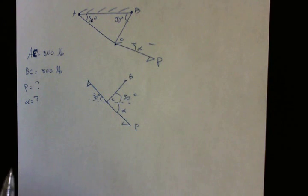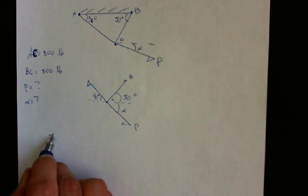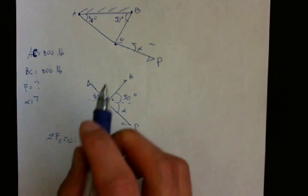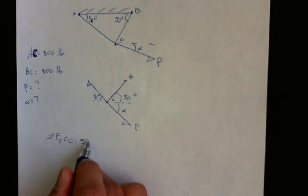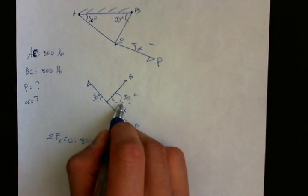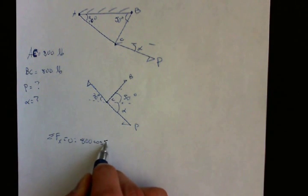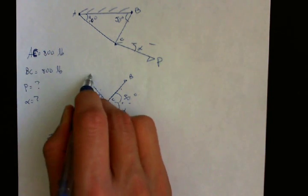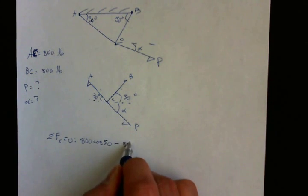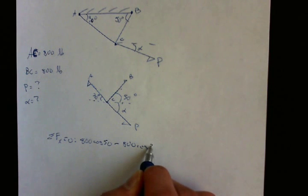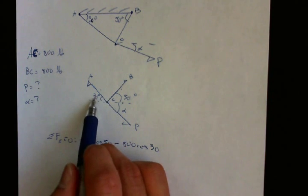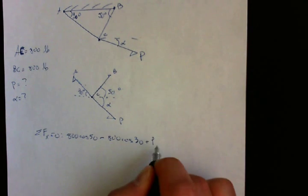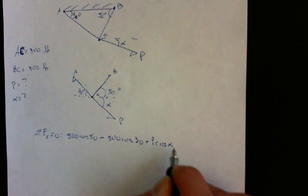So let's start with the forces in the X component. Sum of the forces in the X component equals zero. We have this. So 800 adjacent over hypotenuse cosine 50 minus this one adjacent over hypotenuse minus 800 cosine 30. And here is minus because the force is going to the left. Plus P cosine alpha equals zero.